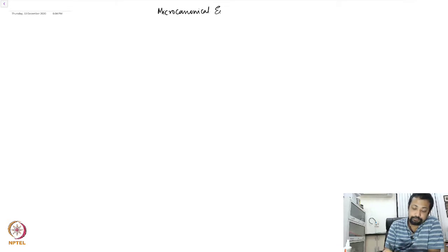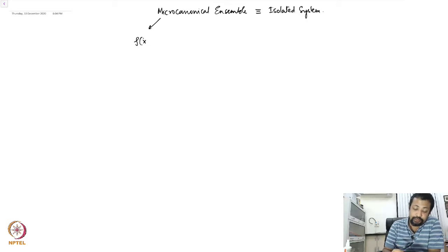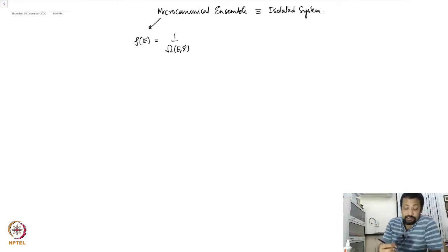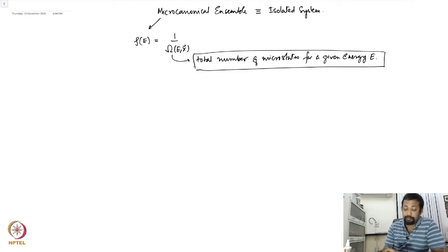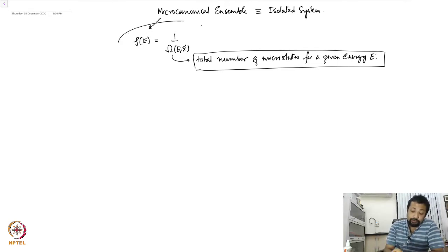We were looking at the microcanonical ensemble, which corresponds to an isolated system in the language of thermodynamics. The idea was to determine the probability density rho(E), which is equal to 1 over Omega(E). This is essentially the total number of microstates for a given energy E. In doing calculations with the microcanonical ensemble, one should always calculate the total number of microstates for a given energy E.